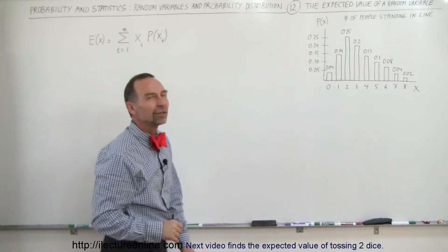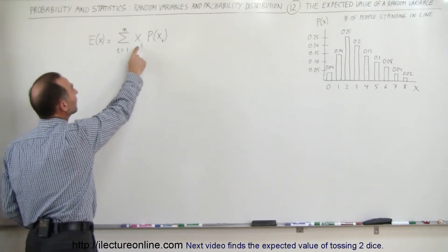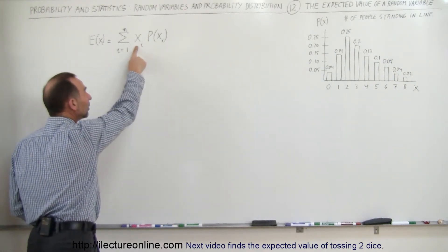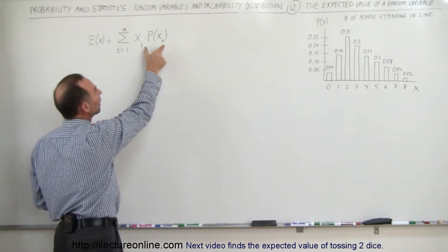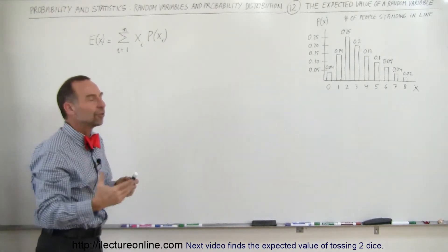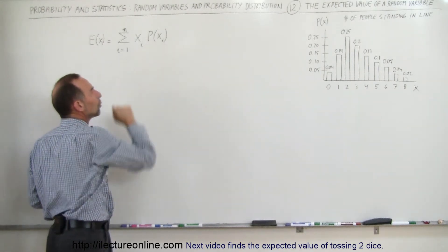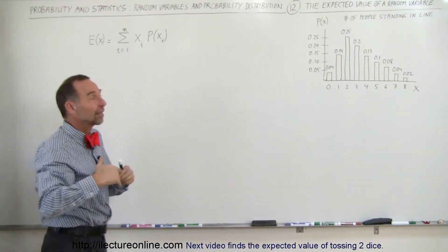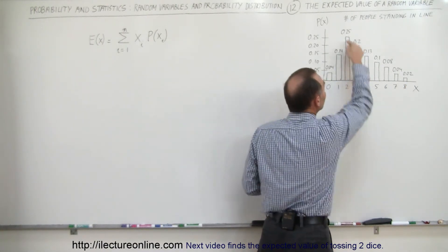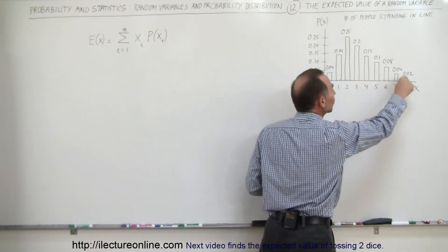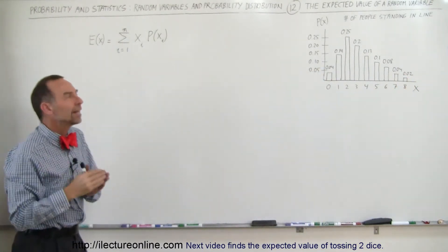So what is the expected value? Here's the equation we use: we multiply the random variable times the probability of that random variable. This is what we call the weighted average. By multiplying by the probability that each number will occur, we adjust for the fact that some numbers are not as likely to occur as others, so they should weigh more in the calculation.